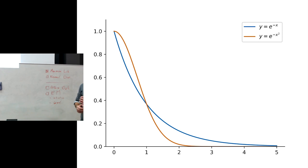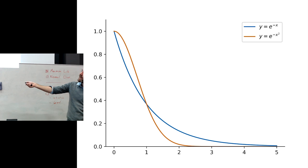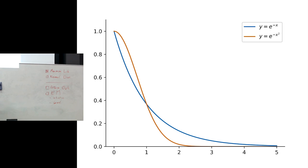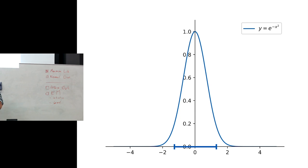We can do e to the power of minus x, which gives a line decaying exponentially. If we go to e to the power of minus x squared, we see an even sharper decay. This orange line has a nice shape where it dips down very quickly. If you extend it to the negative side of the number line it looks like a bell. So e to the power of minus x squared is our basic shape — not a very complicated function.